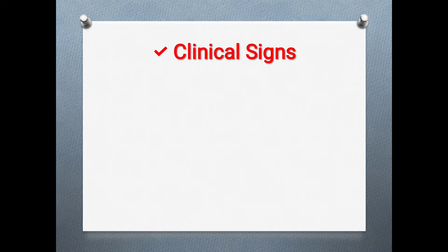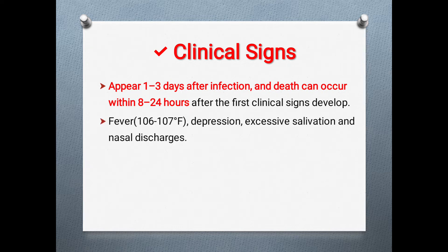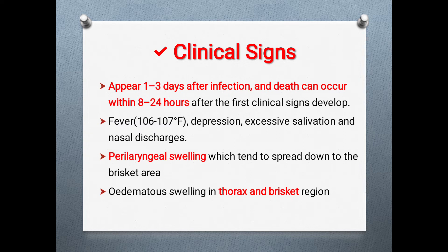Clinical signs appear one to three days after infection, and death may occur within 8 to 24 hours after the first clinical signs develop. Fever may reach up to 106 to 107 degrees Fahrenheit. The animal may be depressed with excessive salivation and nasal discharges. Perilaaryngeal swelling, which tends to spread down to the brisket area, and edematous swelling in the thorax and brisket region may also be seen.